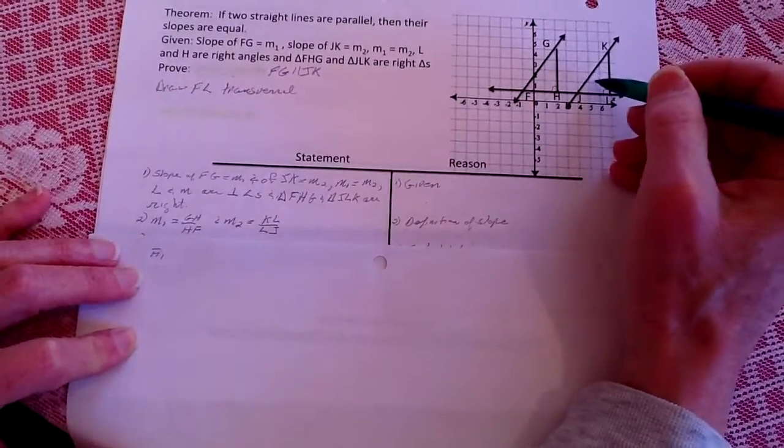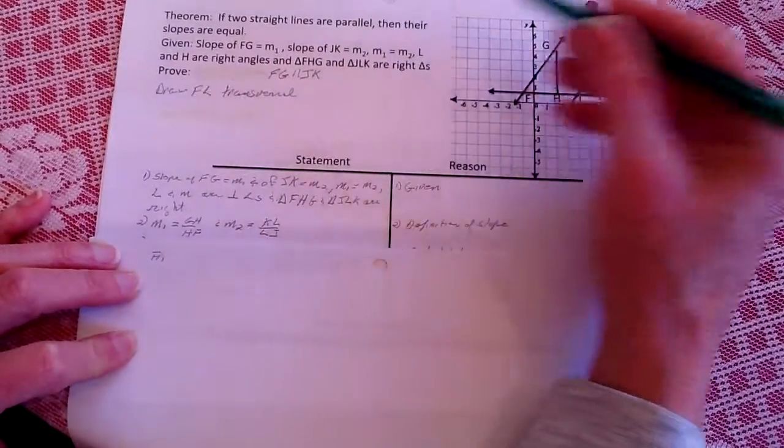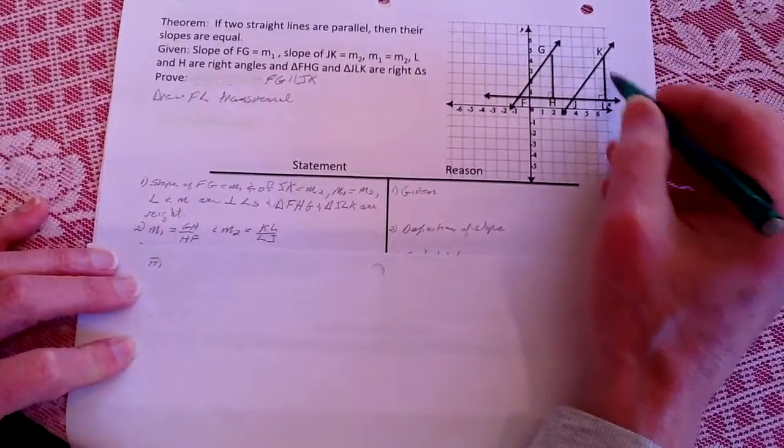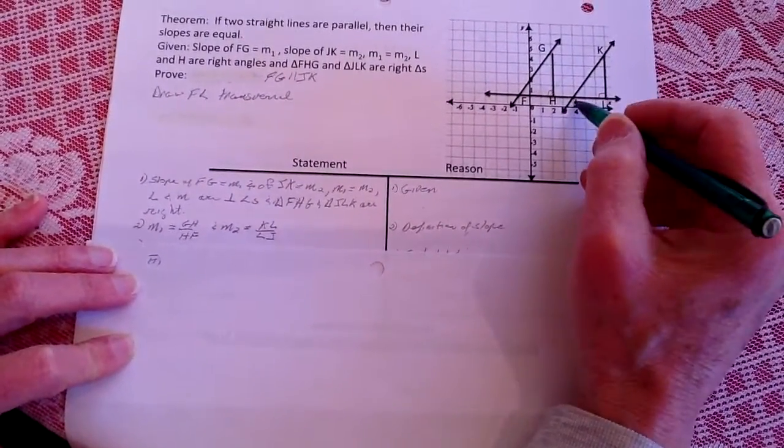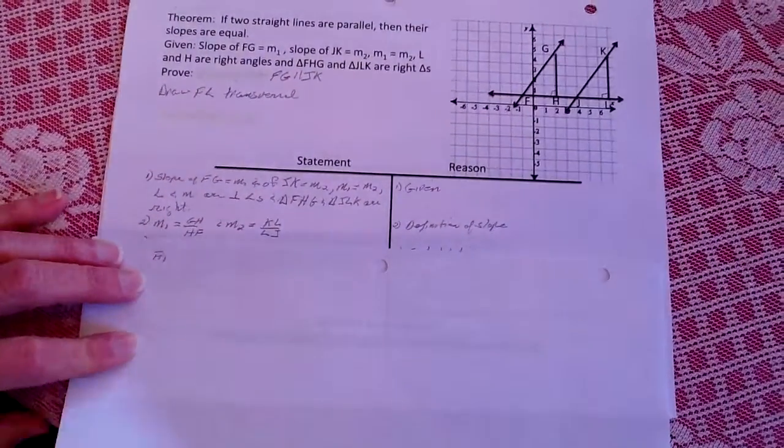Likewise, the slope of JK is going to be the rise of KL over LJ. And that's the definition of slope.